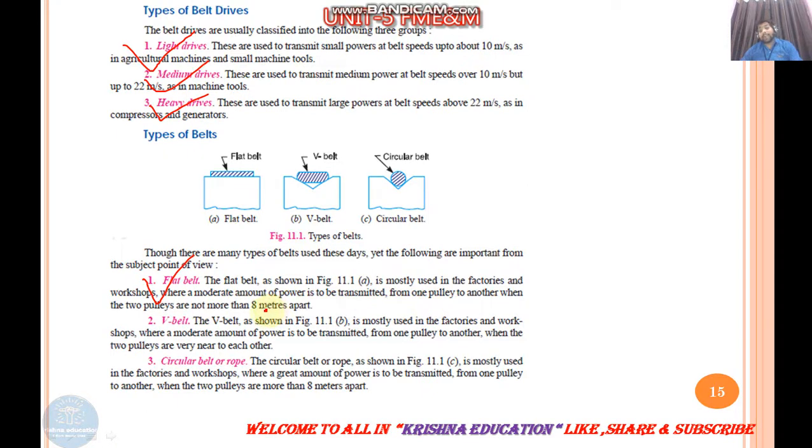Moderate amount of power is transmitted from one pulley to another, but not more than 8 meters apart. The distance between both shafts should not exceed 8 meters, otherwise we cannot use it beyond that. Then we use V-belt drive. V-belt is used in factories and workspaces for moderate amount of power transmission from one pulley to another when two pulleys are very near to each other. When one pulley and second pulley are very close, we use cross belt. Here is the diagram - flat belt you can see.